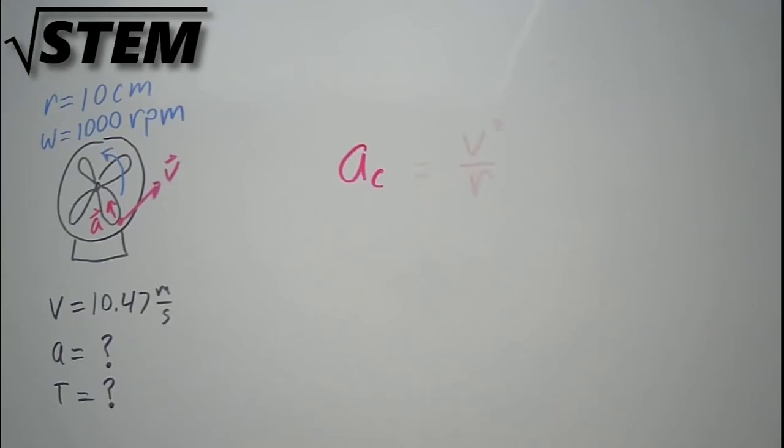Which is equal to v squared over r, where v is the tangential velocity that we just found. So when we plug in our values of 10.47 meters per second and 0.1 meters, we'll find that the centripetal acceleration is equal to 1096.2 meters per second squared.